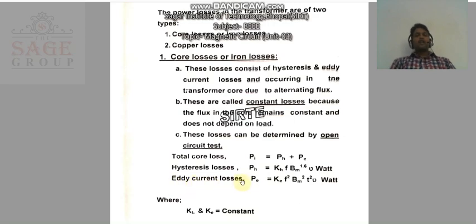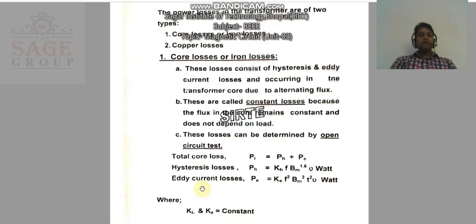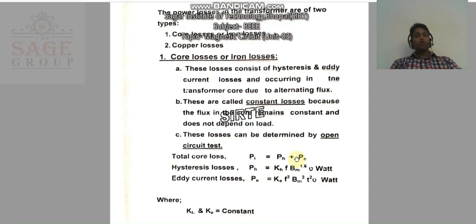Before understanding eddy current loss, we first need to understand what eddy current is. When you supply voltage to the primary winding, current starts flowing in the primary winding, due to which flux is induced in the primary winding. Some part of that flux is linked with the core, and since the core has a circular closed path, a small amount of flux starts flowing in the core.